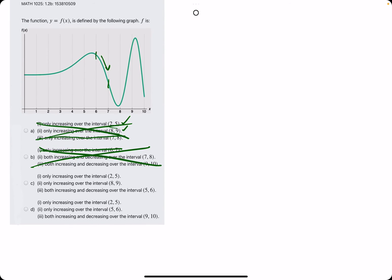Jumping to C, they say it's only increasing from 2 to 5. We claimed that was true in option A, so that still checks out. Only increasing 8 to 9. I think that was also true in option A. So that checks out.